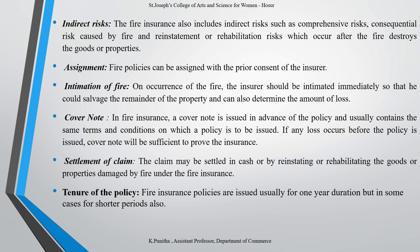Indirect risk — fire insurance also includes indirect risk such as comprehensive risk, consequential risk caused by the fire, and reinstatement or re-evaluation risk which occurs after the fire destroys the goods or properties. Assignment — fire policies can be assigned with the prior consent of the insurer. Intimation of fire — on occurrence of fire, the insurer should be intimated immediately so that he could salvage the remainder of the property and determine the amount of loss. Cover note — in fire insurance, a cover note is issued in advance of the policy and usually contains the same terms and conditions on which the policy is to be issued. If any loss occurs before the policy is issued, the cover note will be sufficient to prove the insurance.